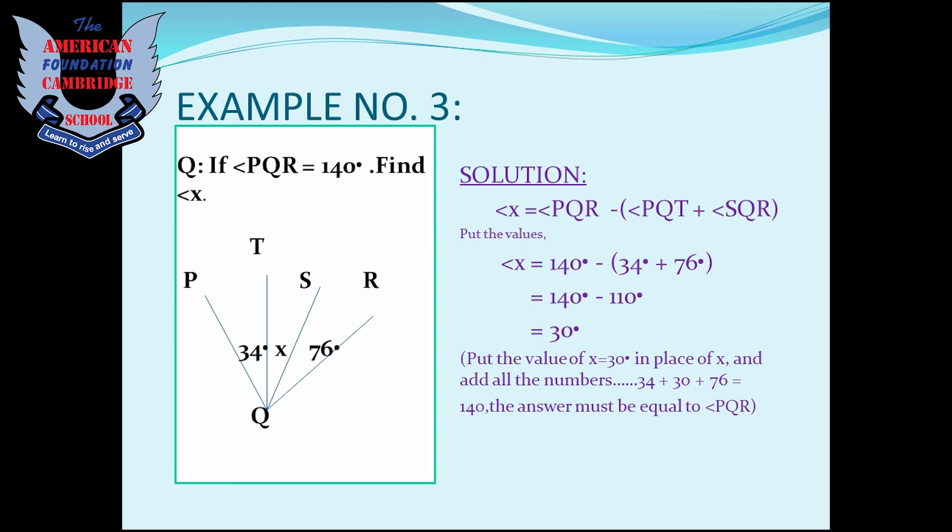For confirmation whether your answer is correct or not, put the value of X, that is 30 degrees, in the following figure and add all the numbers. That is 34 plus 30 plus 76. If the value of X is correct, then your answer after adding all the numbers must be equal to angle PQR.